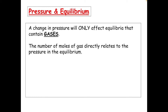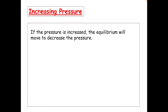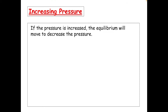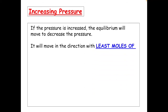The number of moles of gas directly relates to the pressure in the equilibrium. More moles of gas means more gas particles, and those gas particles — if you remember back to the kinetic model — cause more pressure because they're hitting off the container more often. So if the pressure is increased, the equilibrium will move to decrease the pressure; it will move in the direction with the least moles of gas.